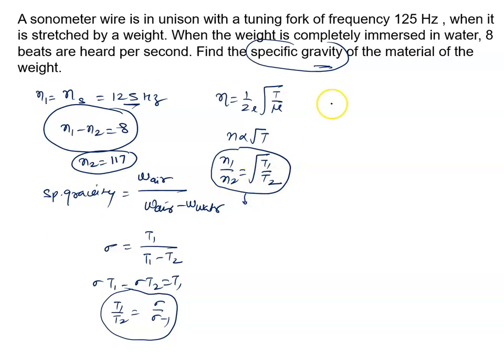N1 is given to us 125, N2 is given to us 117 equals root T1 by T2 sigma upon sigma minus 1. Again you will solve it. It is 1.068 equals root sigma upon sigma minus 1.